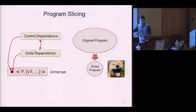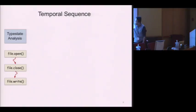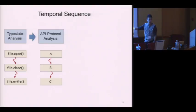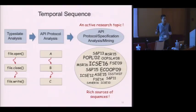With a single program point, these clients can also generate other interesting information, such as temporal sequences. For example, a type state analysis client does not only generate an error statement at a single program point — such as you cannot write to a file after you close it — it also generates temporal sequences leading to these error statements. More generally, API protocol analysis can generate more general temporal sequences about API calls and program semantics. API protocol analysis is a very active research topic, just the same as program slicing.